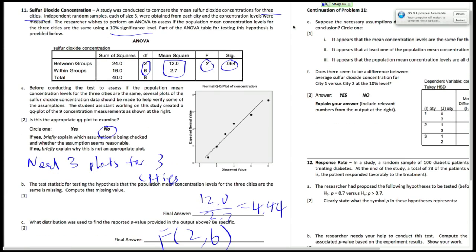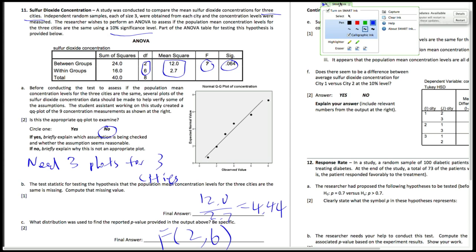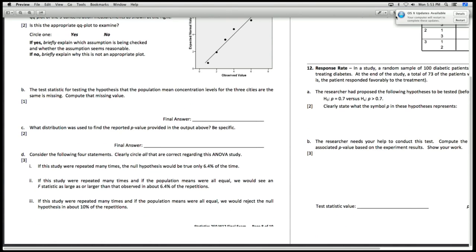And finally, let's clear those answers. To study, we want to give the right interpretation of the p-value. So 6.4% is a p-value. So if the study repeated many times, the null hypothesis would be true only 6.4% of the time. Now this is clearly not true, because 6.4% is saying that's the probability that we reject the null hypothesis, and the null hypothesis is true.